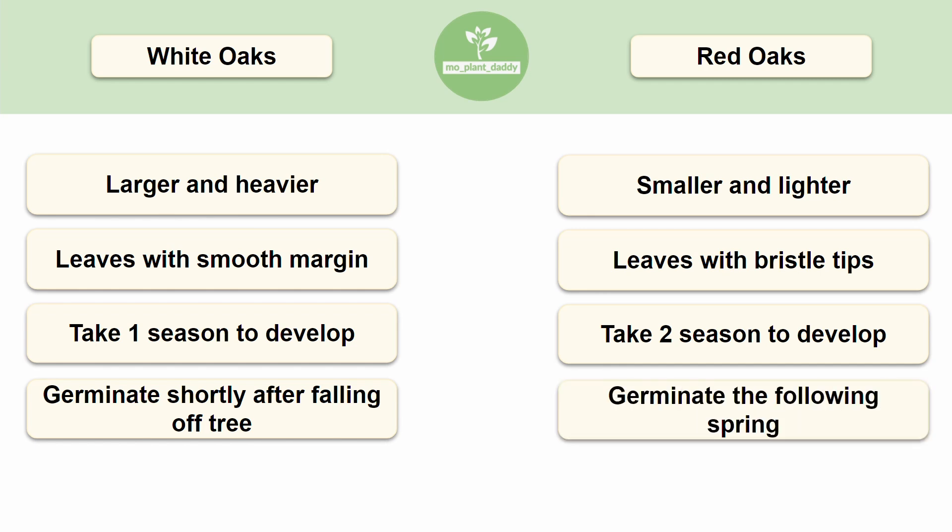Acorns in general are extremely valuable food sources for wildlife. However, the acorns of white oaks are generally preferred by animals because they are less bitter due to containing less of these chemical compounds called tannins. These tannins not only make the acorns bitter, but they also make them more difficult to digest.